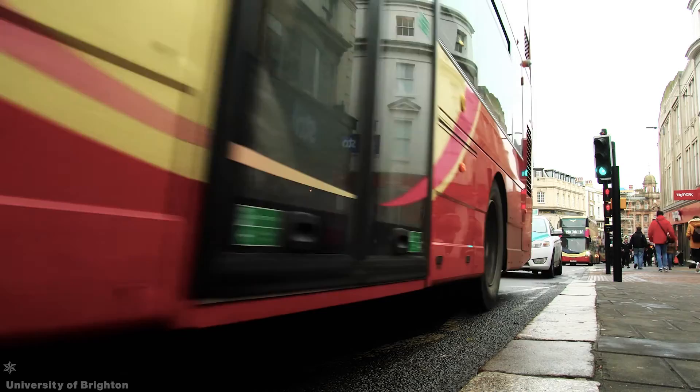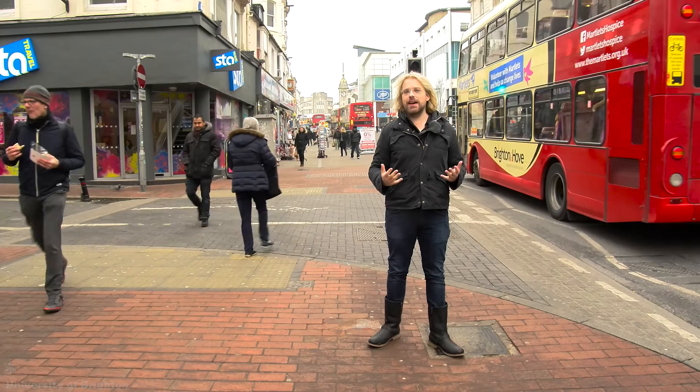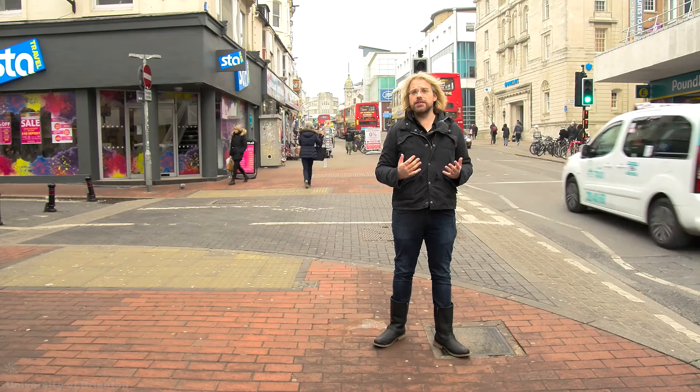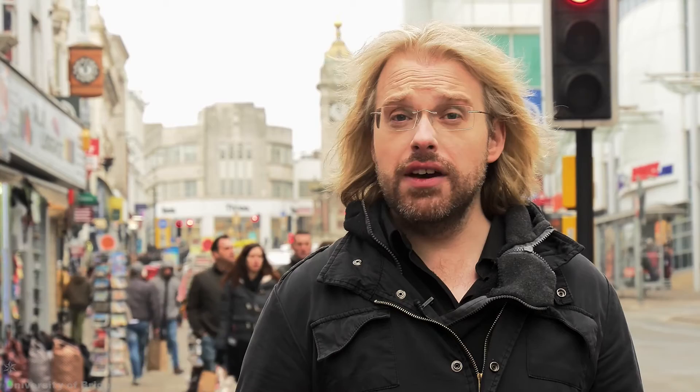According to the National Geographic Society, air pollution is the existence of chemicals or particles in the air that can cause harm to the health of humans, animals and plant life, and it can even damage buildings and materials. We can divide air pollution into two distinct categories: gases, and solid or liquid particles, and within those classes there are many different types of chemical species.